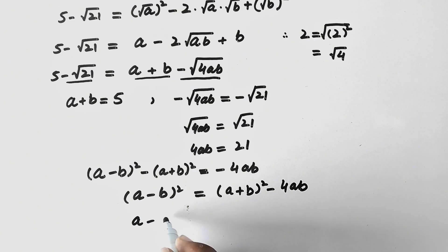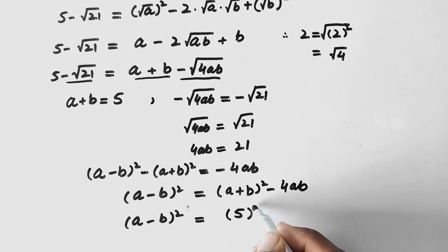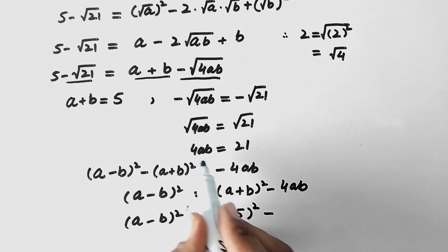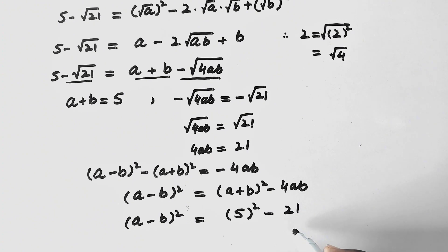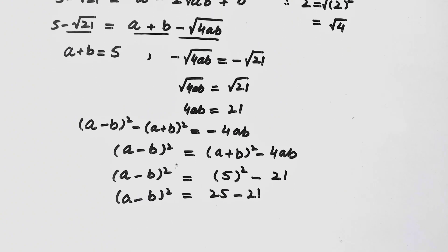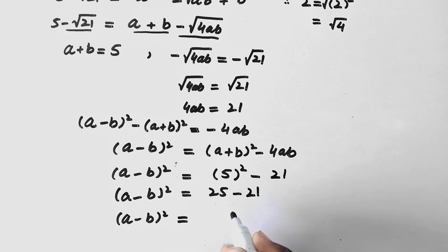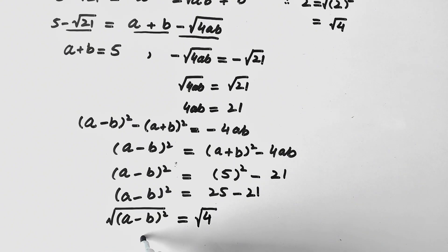Now substituting the known values: A + B = 5, so (A + B)² = 25, and 4AB = 21. Therefore (A - B)² = 25 - 21 = 4. Taking the square root on both sides gives A - B = 2.